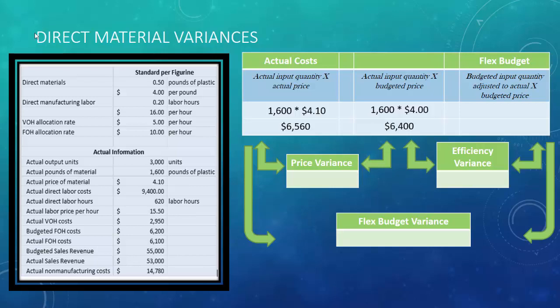The last column is the flex budget column: budgeted input quantity adjusted to actual, multiplied by budgeted price. We budgeted half a pound of plastic per figurine, multiplied by the actual 3,000 units produced, giving 1,500 pounds. Multiplied by the budgeted price of $4 per pound, that comes to $6,000. So our flex budget says we should have spent $6,000 on materials for our actual production.